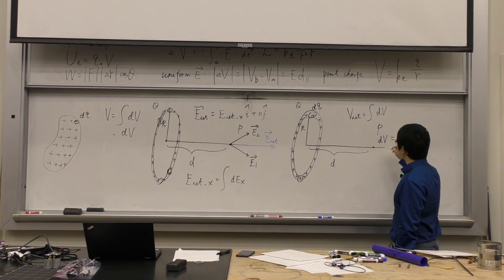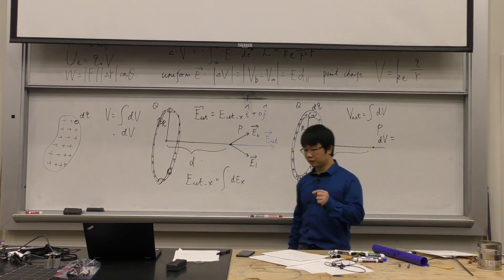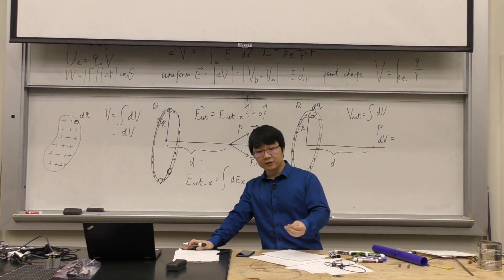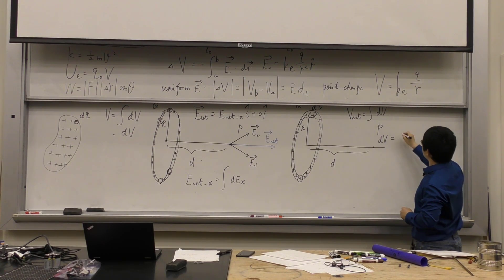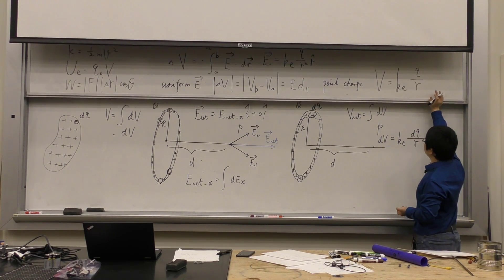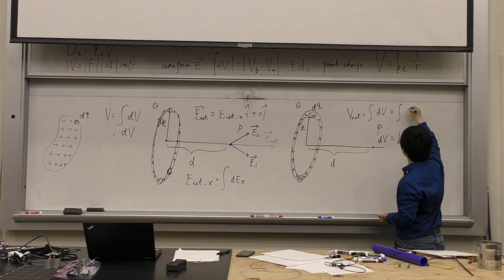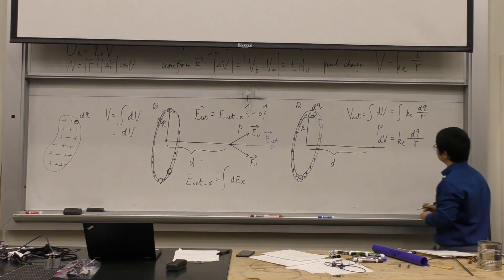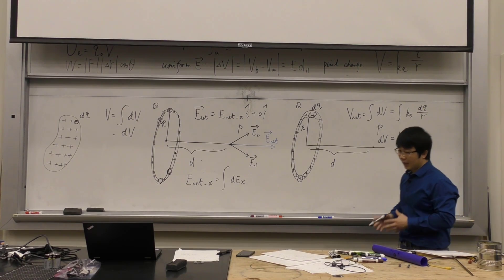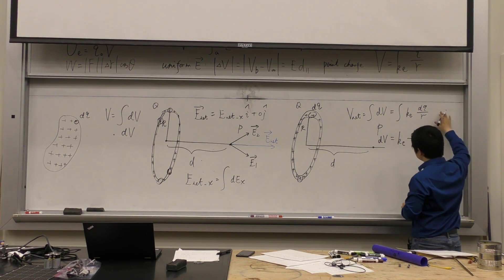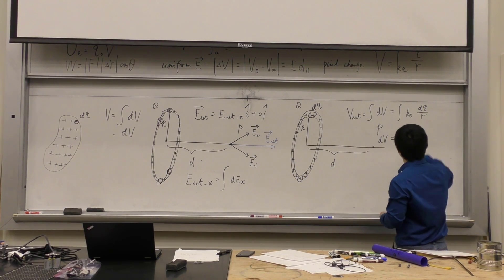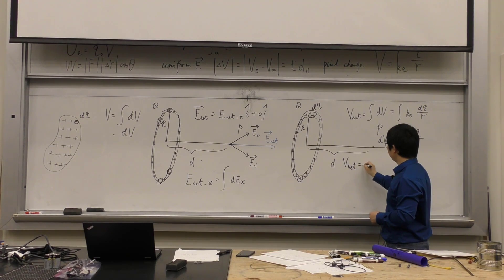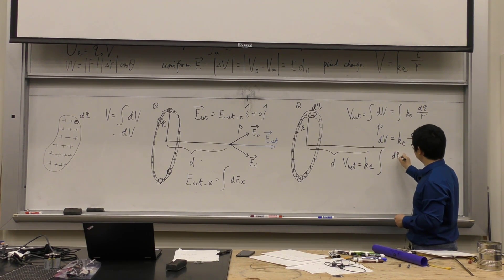DV equals KE·DQ/R, using the point charge theory since DQ is infinitely small. Now inside the integral, I have DQ and R. R is the distance from the source charge DQ to point P. For a right triangle, R equals the square root of big R² plus D², where big R is the ring radius and D is the distance from P to the center. This R is the same for every DQ on the ring — it doesn't change.